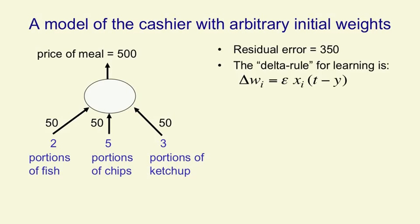We're then going to use the delta rule for revising our prices of portions. We make the change in a weight, delta w_i, be equal to a learning rate epsilon, times the number of portions of the ith thing, times the residual error, the difference between the target and our estimate.